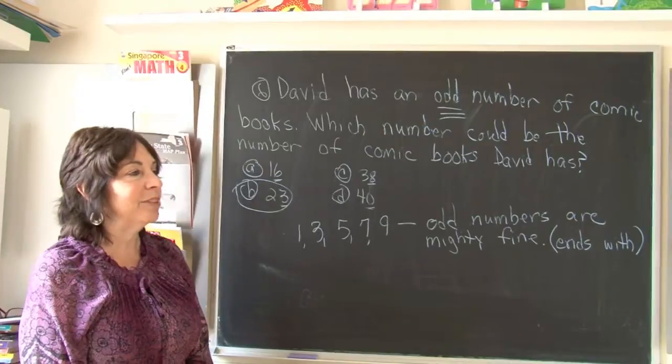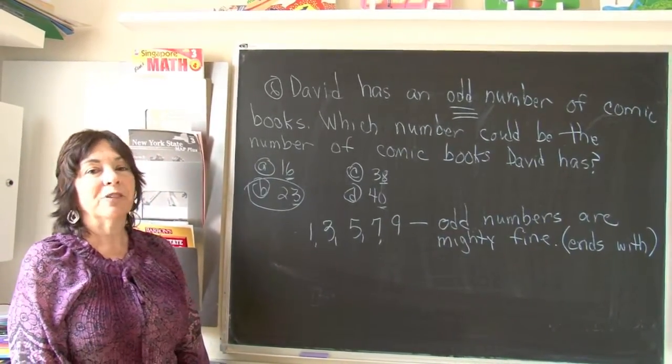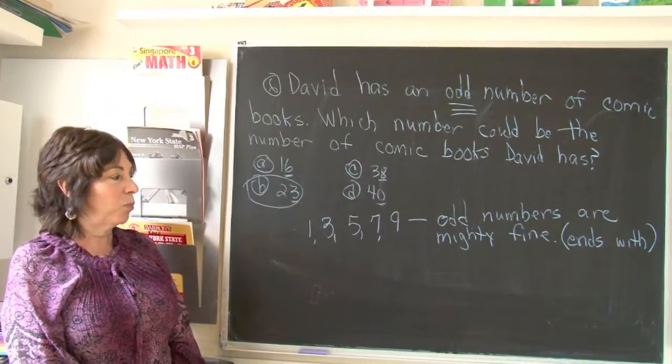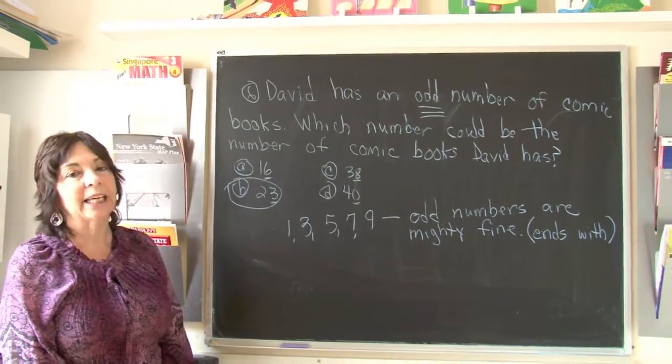One, three, five, seven, nine. Odd numbers are mighty fine. And remember, any number that ends with one, three, five, seven, nine is an odd number.